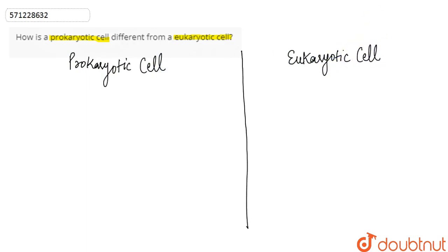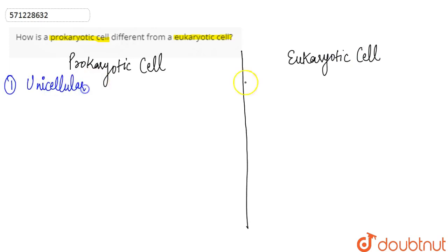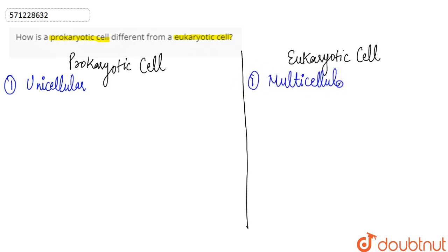The very first difference is that prokaryotic cell organisms are unicellular, whereas eukaryotic cell organisms are multicellular.